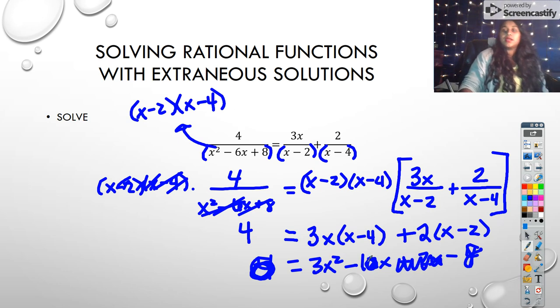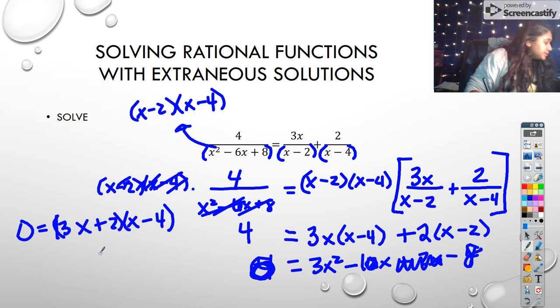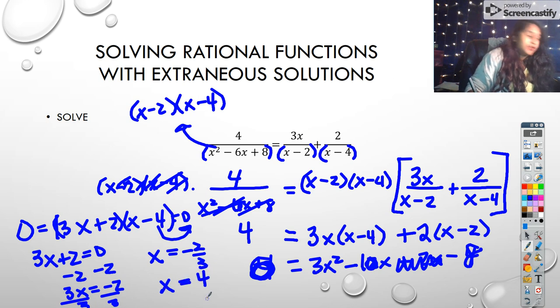So I'm left with 3x squared minus 10x minus 8, which I can factor out into 3x plus 2 and x minus 4. And so then I can solve each of these equal to 0. So 3x plus 2 equals 0. I bring the 2 over. And now I'm left with 3x equals negative 2. And I divide by 3. And over here, this one's simple. If I set that equal to 0, I just bring the 4 over. So that means x equals negative 2 thirds and x equals positive 4.